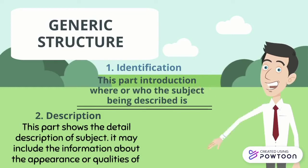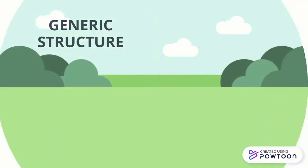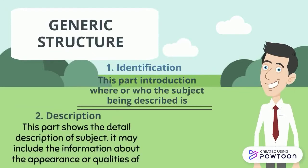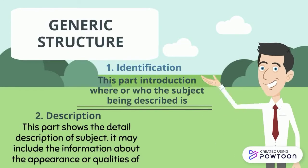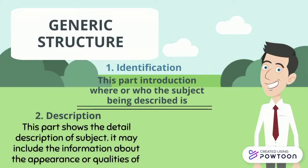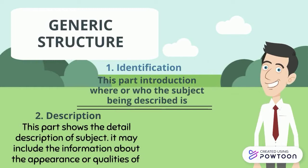Description — this part shows the detailed description of the subject. It may include information about the appearance or quality. Jadi, untuk membuat descriptive text, kita memerlukan generic structure, yaitu bagian-bagian yang terdapat dalam descriptive text. Yang pertama, identification — identifikasi adalah bagian yang memperkenalkan di mana atau siapa subject yang dideskripsikan.